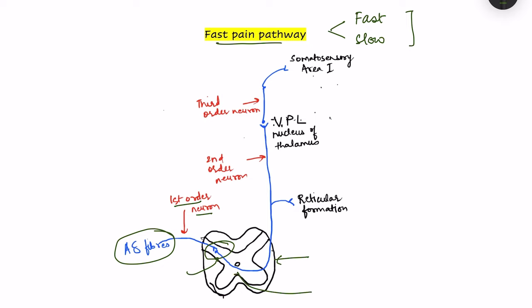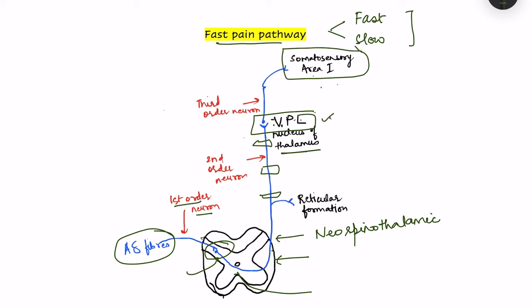The second order neuron crosses to the opposite side anterior to the central canal and ascends as the lateral spinothalamic tract. Because this is a fast pain pathway which is evolutionarily new, it is known as the neospinothalamic tract. It ascends through the medulla, pons, midbrain, and finally reaches the thalamus, relaying in the ventral posterolateral (VPL) nucleus. The third order neuron arises from this nucleus and reaches somatosensory area 1, located in the cortex posterior to the central sulcus.